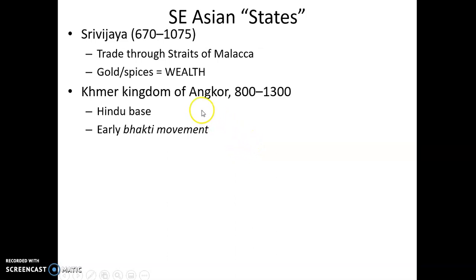The Khmer Kingdom of Angkor falls more into our time frame. Centered in what is now Cambodia, it had a strong agricultural base but also traded forest products with Chinese and Indian merchants. The first ruler of the Khmer Kingdom was a devotee of the Hindu deity Shiva, while other deities ruled over smaller realms. This analogy was used to consolidate power, where the leader would rule over the human universe and surrounding chieftains would rule their own areas.